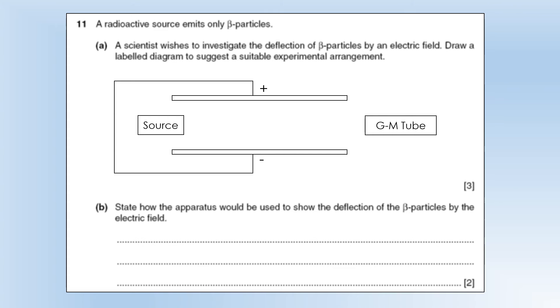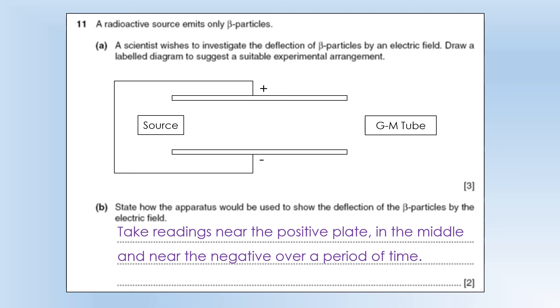We've got a positive plate and a negative plate. We need some sort of power source to create that, which I probably should have shown in there. We've got our source, and then we've got our Geiger-Müller tube on the opposite side of the electric field. So in order to show the deflections, we're going to need to measure the count rate at different locations.